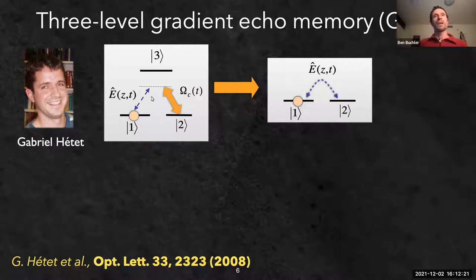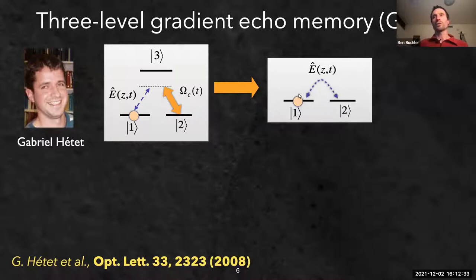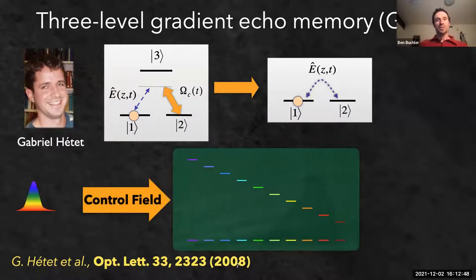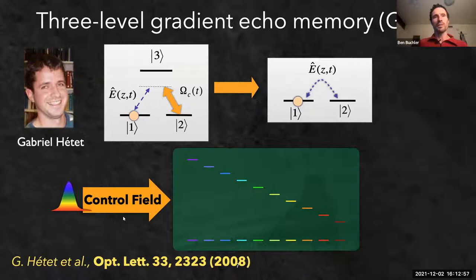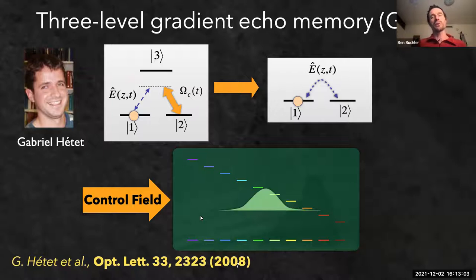To avoid spontaneous emission, we use a three-level system familiar from electromagnetically induced transparency. A very strong control beam (yellow) and a weak field to be stored exist alongside the control field, which allows Raman absorption between two ground states. This creates an effective two-level system from two ground states; turning off the control decouples them, and quantum information encoded in ground-state coherence can last a very long time.